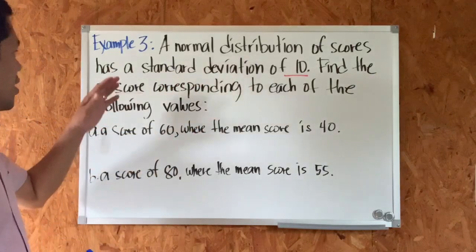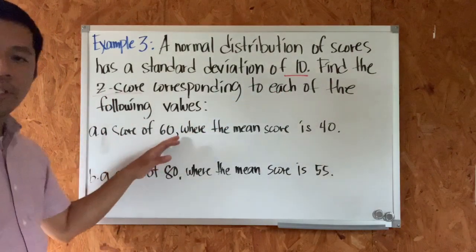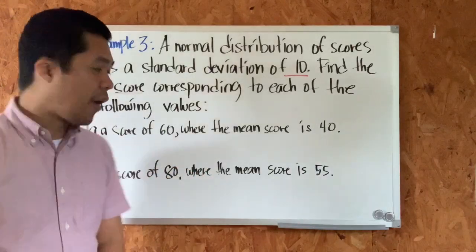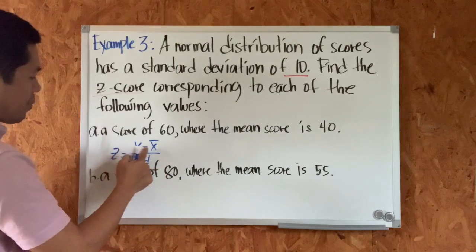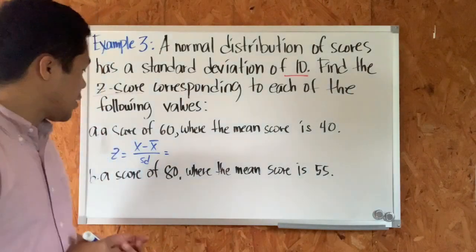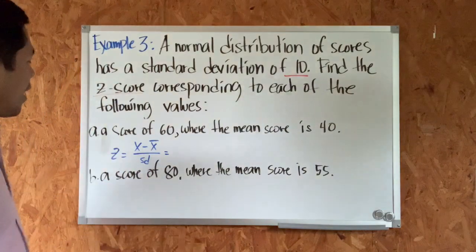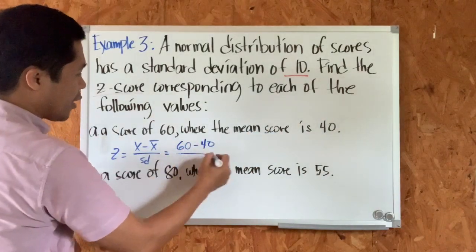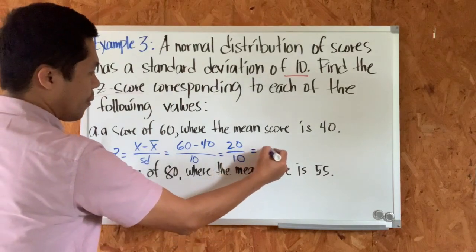A normal distribution of scores has a standard deviation of 10. Find the z-score corresponding to each of the following values. For letter a: a score of 60 where the mean score is 40. Using the formula — observation minus mean divided by standard deviation — x is 60, the mean is 40, and the standard deviation is 10. This equals 20 divided by 10, which is equal to positive 2.